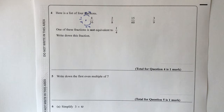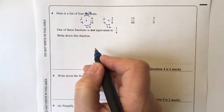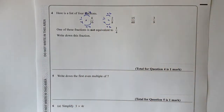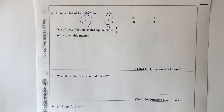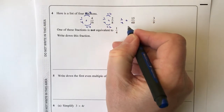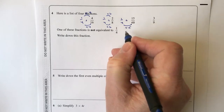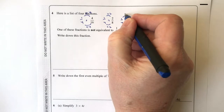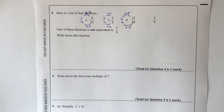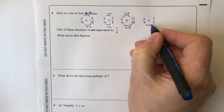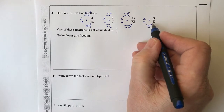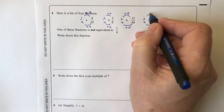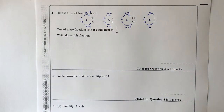For 2/8: multiplying 1 by 2 gives 2, and 4 by 2 gives 8 — so that's equivalent to a quarter. For 15/60: multiplying 4 by 15 gives 60 and 1 by 15 gives 15 — also equivalent. That leaves 3/9: there's no single number you can multiply 4 by to get 9 and multiply 1 by to get 3 simultaneously. So 3/9 is not equivalent to one quarter.